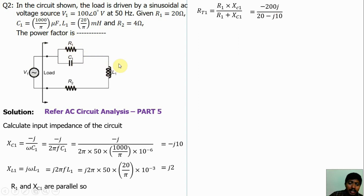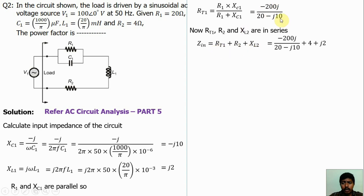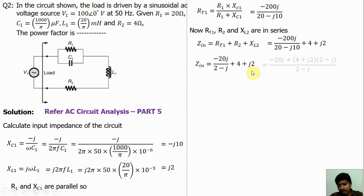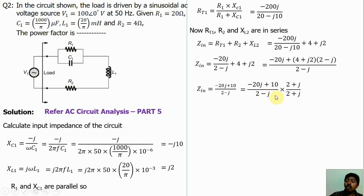Now the total impedance: RT1, L1, and R2 are in series. If components are in series, the resultant is additive. So Z equals RT1 plus R2 plus XL2. Substituting: RT1 equals minus 20j divided by (20 minus j10), R2 equals 4 ohms, and XL2 equals j2. Further simplifying, we get Z equals (minus 20j plus 10) divided by (2 minus j). The denominator has an imaginary term, so multiply both numerator and denominator by the complex conjugate of (2 minus j), which is (2 plus j), to eliminate the imaginary term in the denominator. The resultant value is Z equals 8 minus 6j.